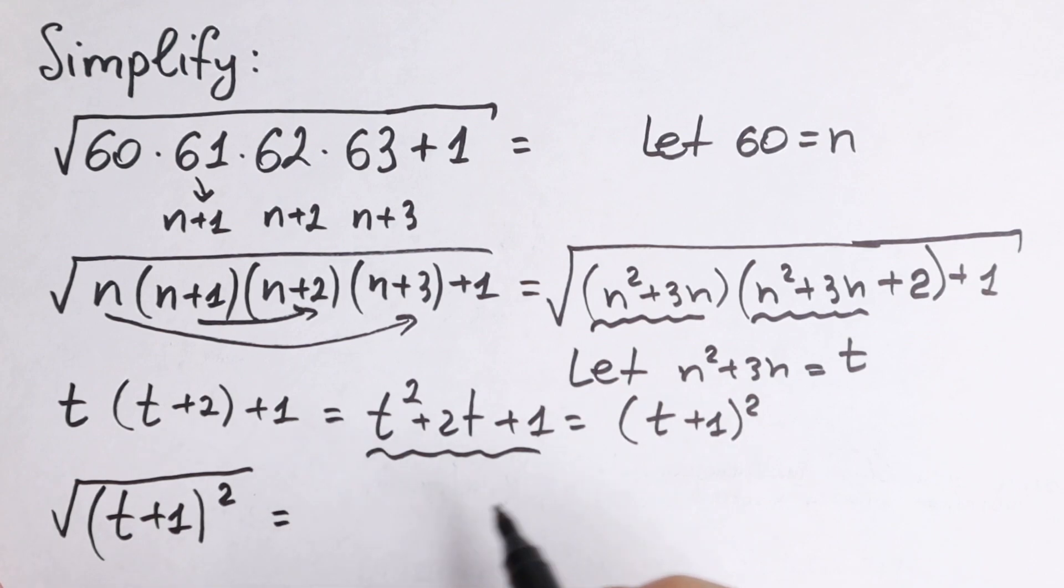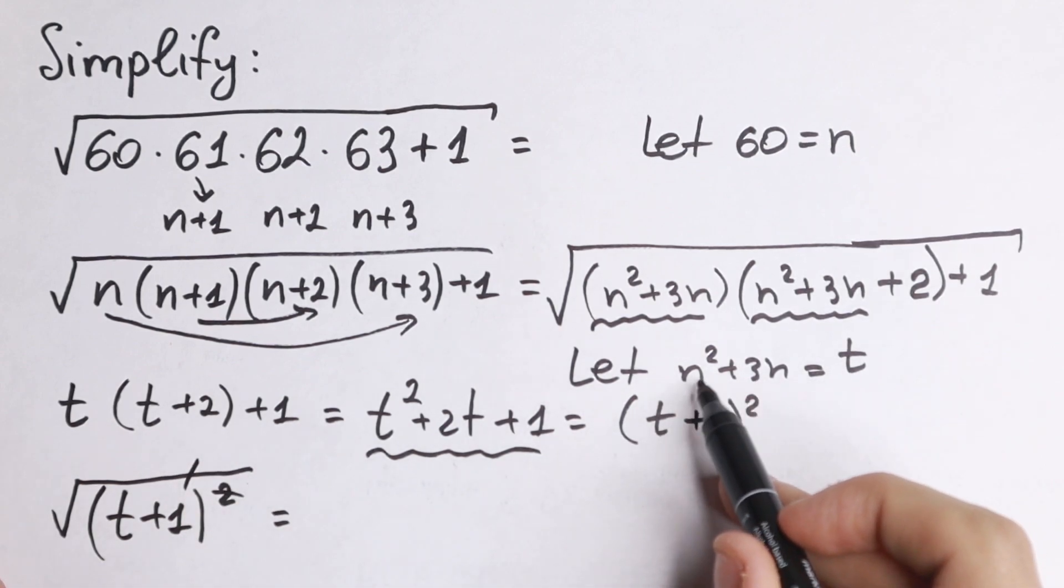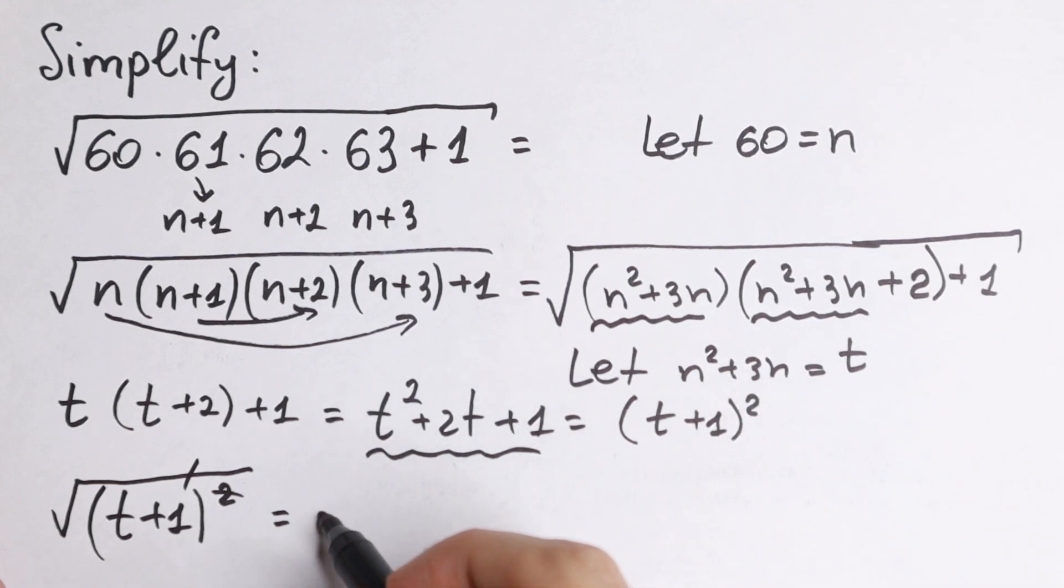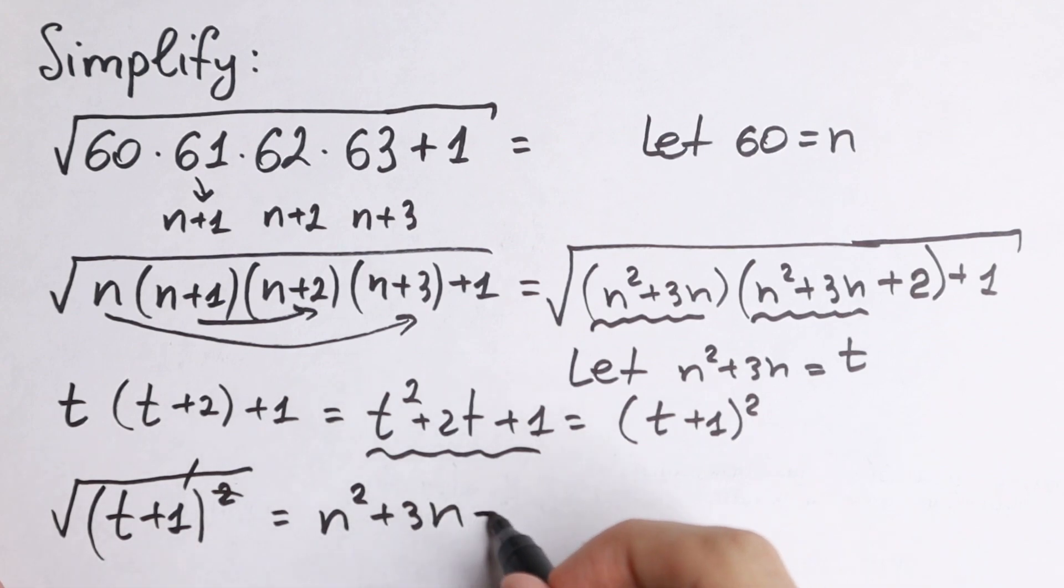Let's plug in all of these elements. As a result, the square and square root will disappear. Since t equals n square plus 3n, we will have n square plus 3n plus 1 in the end.